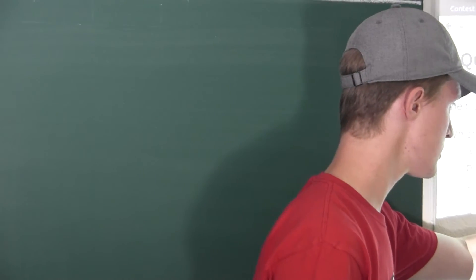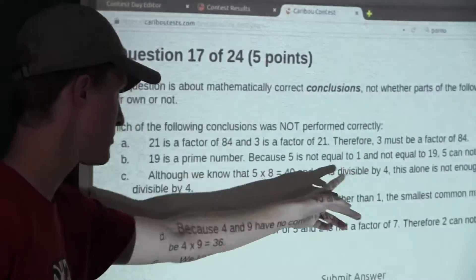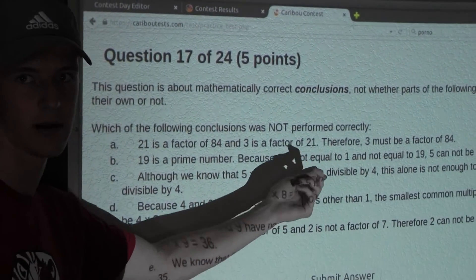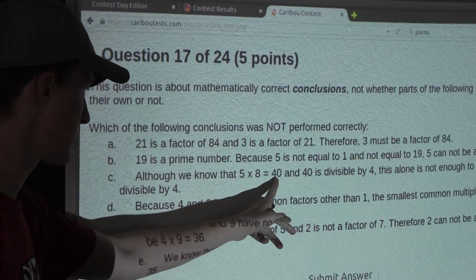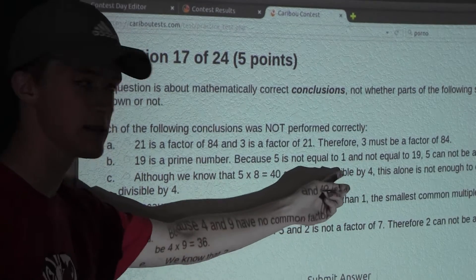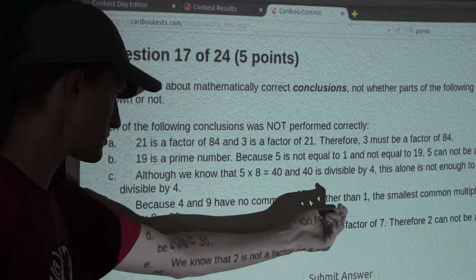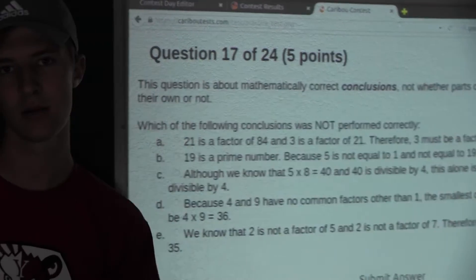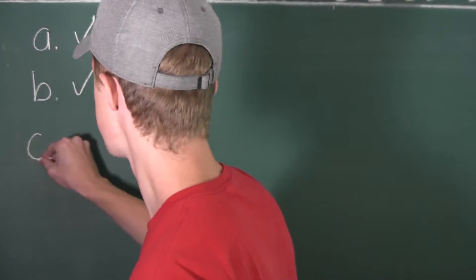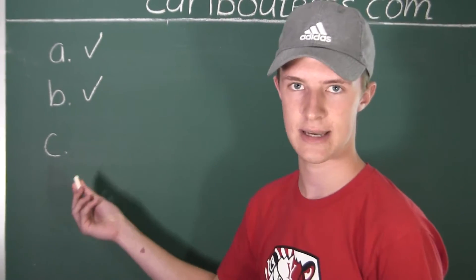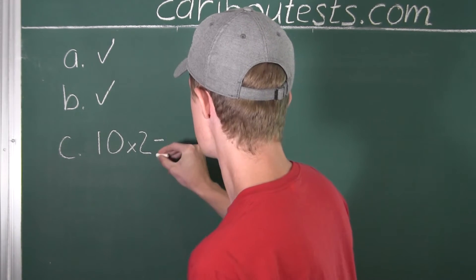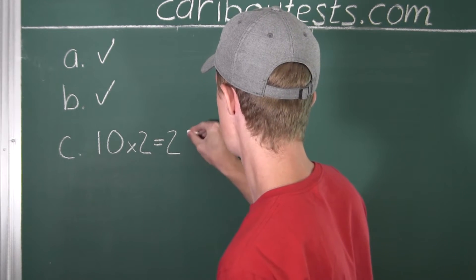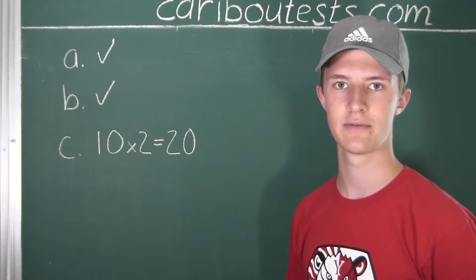Well, I will give an example that shows that if a product is divisible by a number, like here 40 is divisible by 4, then it does not mean that one of the two factors of the product must also be divisible by this number, like for example 4. So, I will use the numbers 10 and 2, so 10 times 2, which is equal to 20.